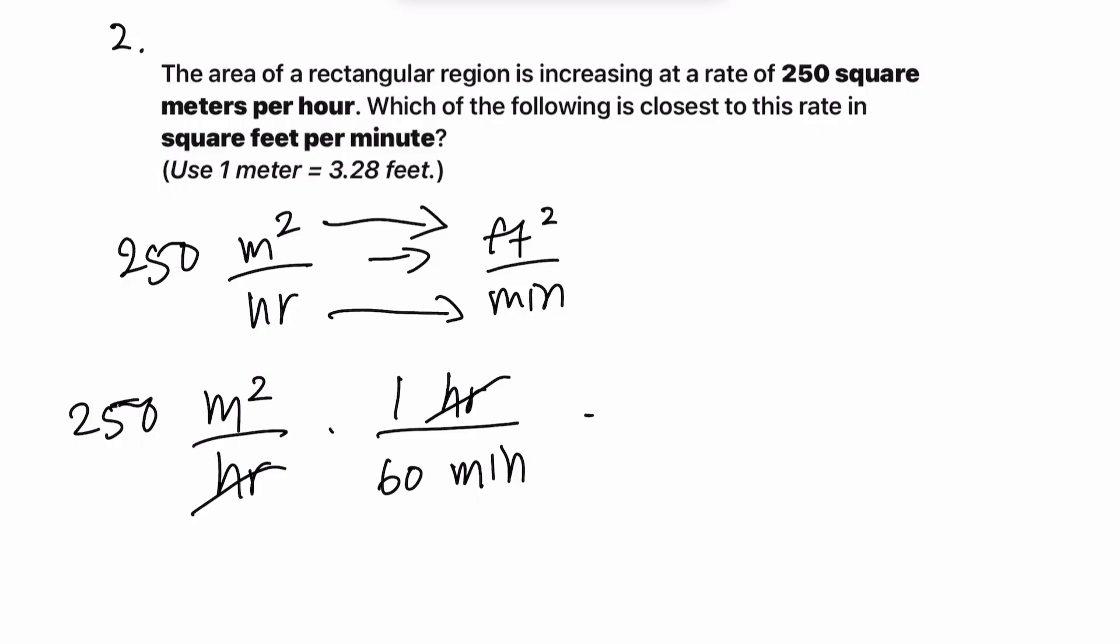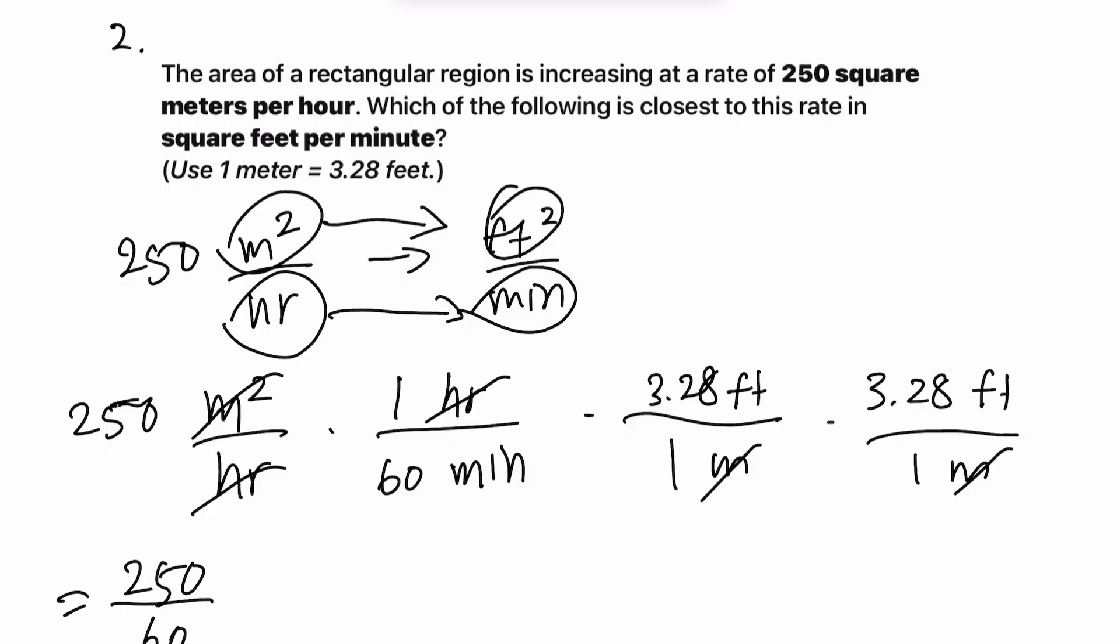Now, we can take that one step further. Since we already converted from hours to minutes, we want to convert from meters squared to feet squared. So let's do that 3.28 feet over 1 meter times 3.28 feet over 1 meter because it's meters squared. So these meters cross out with that meter squared up top. 250 divided by 60 times 3.28 squared. What are the units we have left? We have feet squared. We also have minutes. Feet squared over minutes, which is exactly the type of form that we wanted.